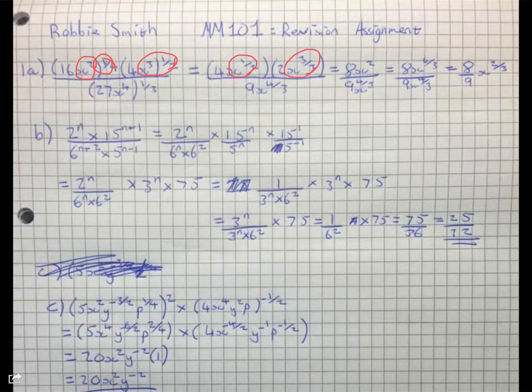But you've just tripped up because 16 to the power of a quarter is actually equal to 2. So that should be a 2 here. And the square root of 4 is 2, that one there is okay.